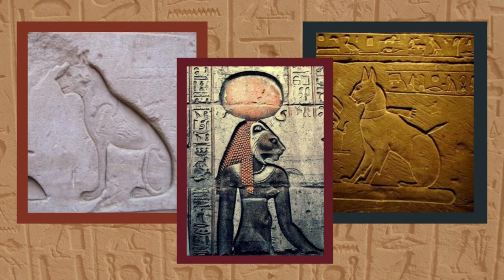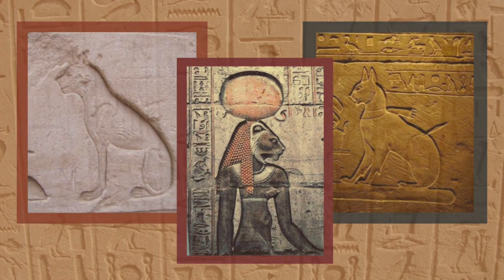Bastet was easily identifiable in hieroglyphics as the cat-headed woman. She was a significant deity from a very early period in Egyptian history. At the valley temple of Khafre at Giza, she and Hathor were the only gods whose names were recorded.